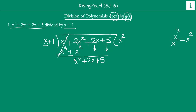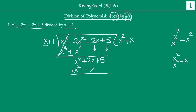Now we take the first term of our new dividend, which is x², and divide it by the first term of the divisor, x. When you divide x² by x, you get x. So our second term in the quotient is x. We multiply x by the entire divisor: x times x is x², and x times 1 is x. We subtract — x² cancels out, 2x minus x gives x, and the 5 comes down. So our next dividend is x + 5.